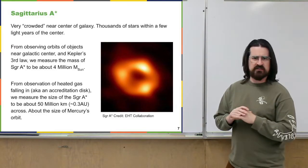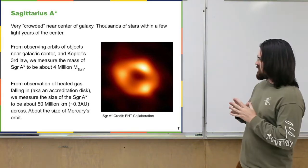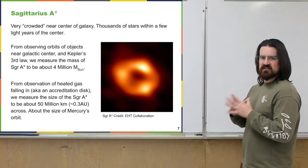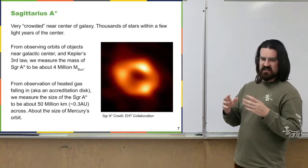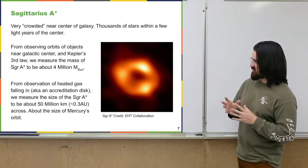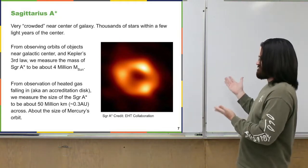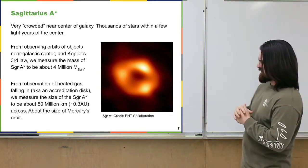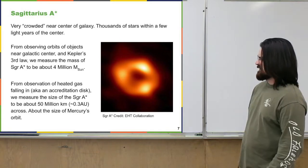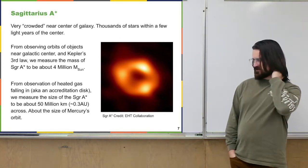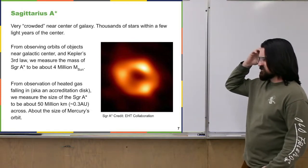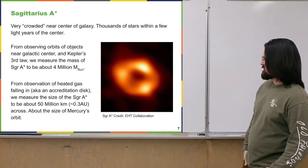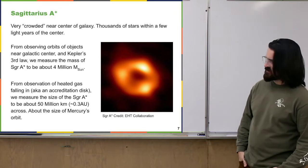Only fairly recently did we get an actual image of the thing at the very center of our galaxy, called Sagittarius A*, that we are now fairly certain is a supermassive black hole. It's kind of fuzzy, but this image was created by the Event Horizon Telescope Collaboration and released around 2022. The observations were taken over quite a few years to gather enough data to build this image.